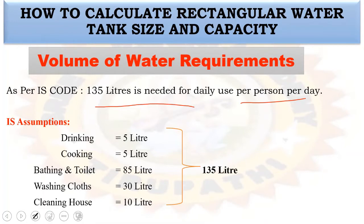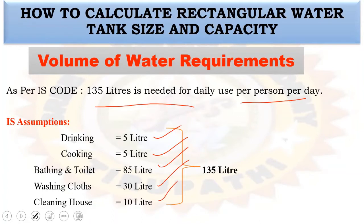Here are the assumed daily water usage figures: for drinking purpose, 5 liters; for cooking, 5 liters; for bathing and toilet, 85 liters; for washing clothes, 30 liters; for cleaning house, 10 liters. The total comes to 135 liters per person per day for daily purposes.